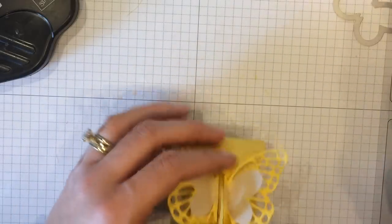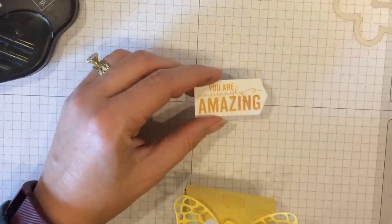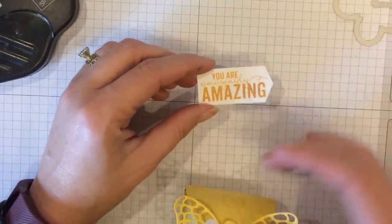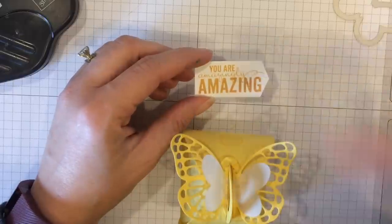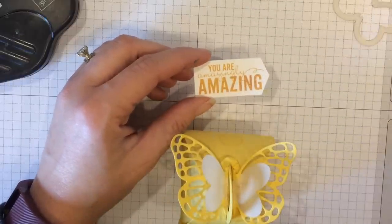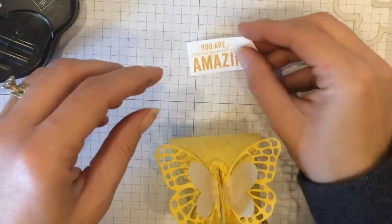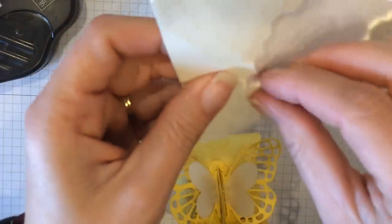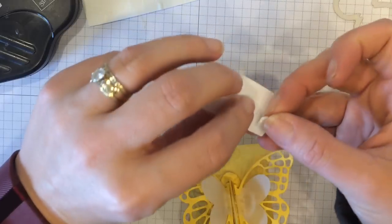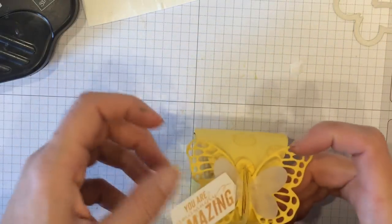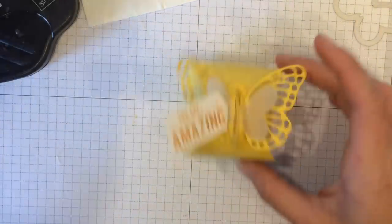Now, for the sentiment. It's from that same butterfly stamp set. I can't remember what it's called. Butterfly Basics. I stamped it on Whisper White and Daffodil Delight. And then I cut it out. This is a tag framelit from the gift card thinlit set. And I'm going to take a dimensional. And I'm going to put this just kind of sticking off of that wing right there.